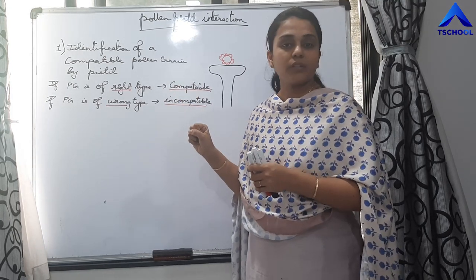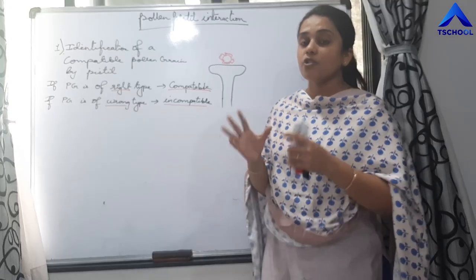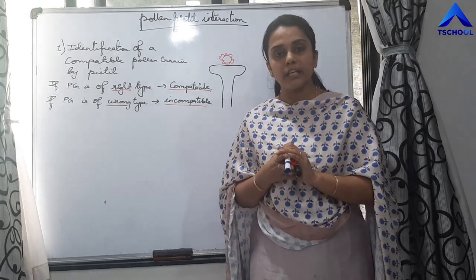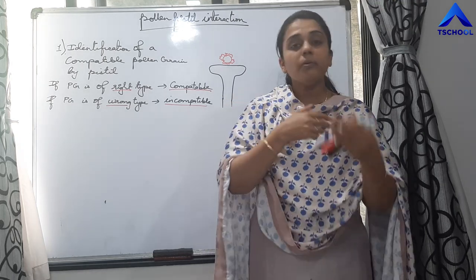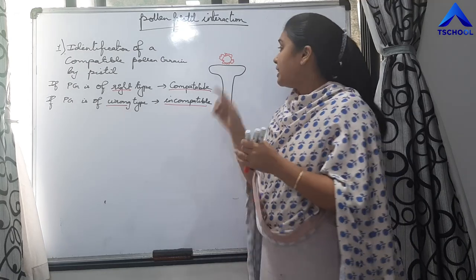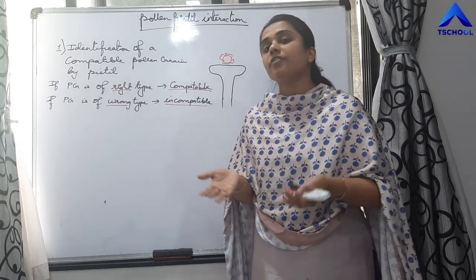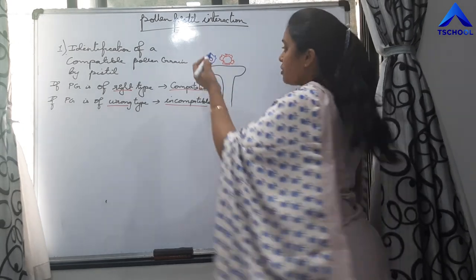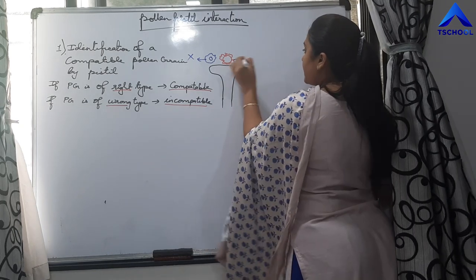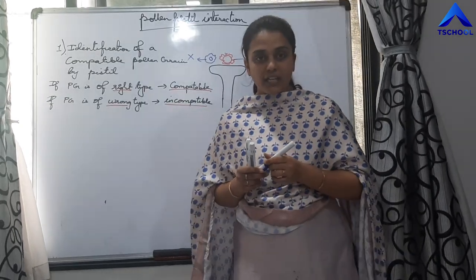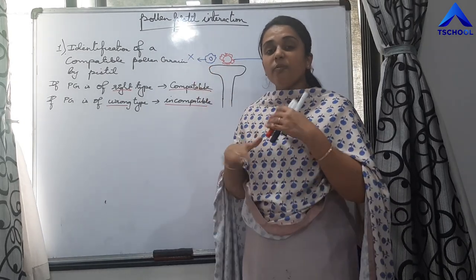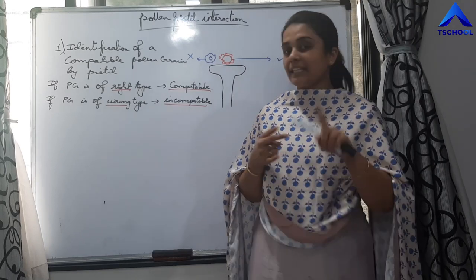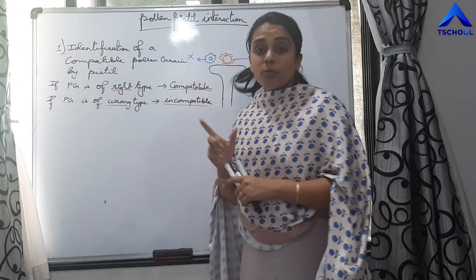How can we decide that the pollen grain is of the right type? It means the pollen grain should be of the same species. Different agencies help in pollination — animals, birds, or insects — and they can bring pollen of the same species or a different species. So there are chances that pollen of a different species may arrive. If the pollen grain is of the same species, only then is it considered compatible.